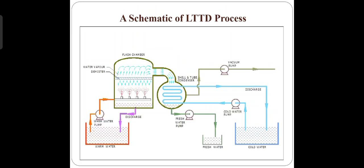The main components of the LTTD plant which are required are the evaporation chamber, the condenser, pumps and pipelines to draw warm water and cold water, and a vacuum pump to maintain the plant at sub-atmospheric pressures.